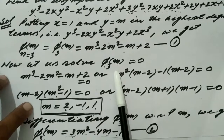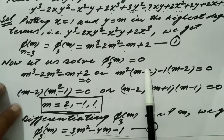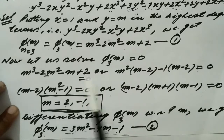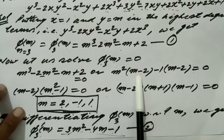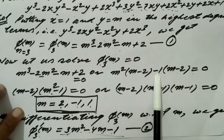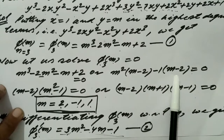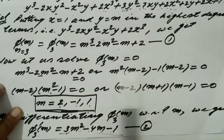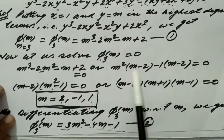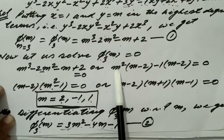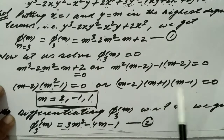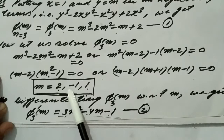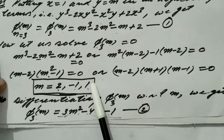Now we solve φ₃(m) = 0, i.e., m³ − 2m² − m + 2 = 0. Factoring: m²(m − 2) − 1(m − 2) = 0, so (m − 2)(m² − 1) = 0, giving (m − 2)(m + 1)(m − 1) = 0. Therefore m = 2, −1, and 1. All three values are distinct.